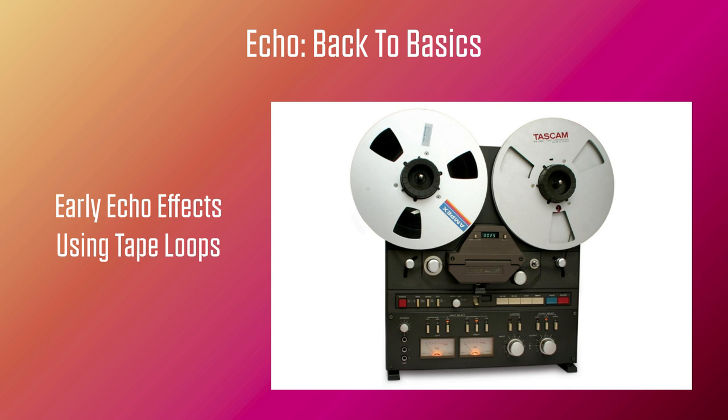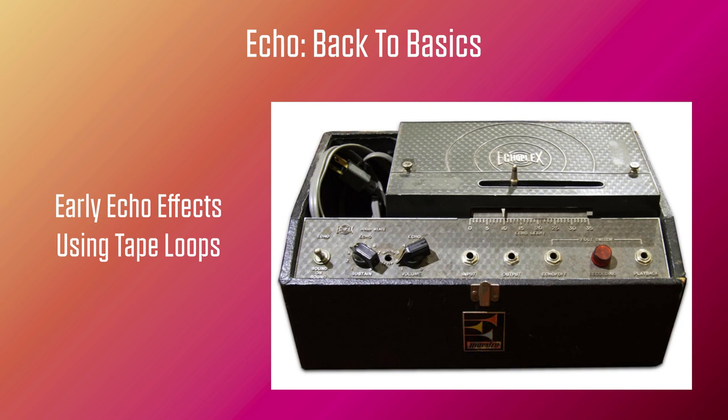Of course, it didn't take long for engineers to come up with dedicated echo units. Most were based on a continuous loop of tape, or an endless tape cassette running past a record head, followed by one or more playback heads. An erase head would then wipe the tape clean before it reached the record head again. One of the first commercial tape delays was the Maestro Echoplex, which had just one replay head.